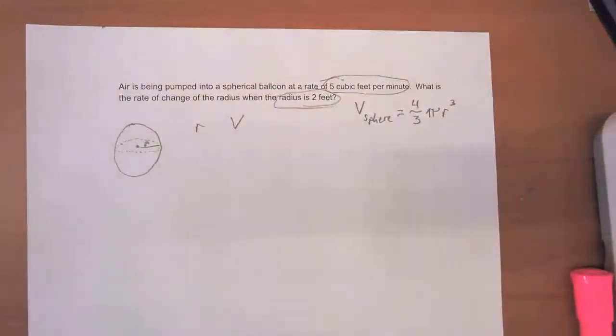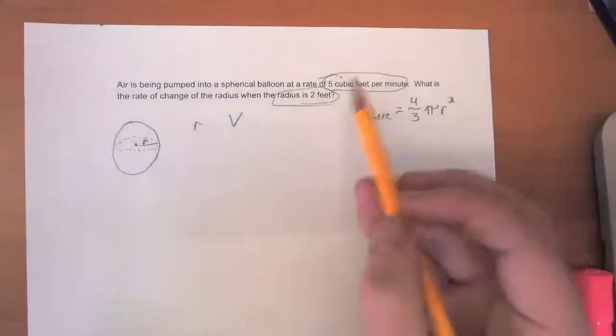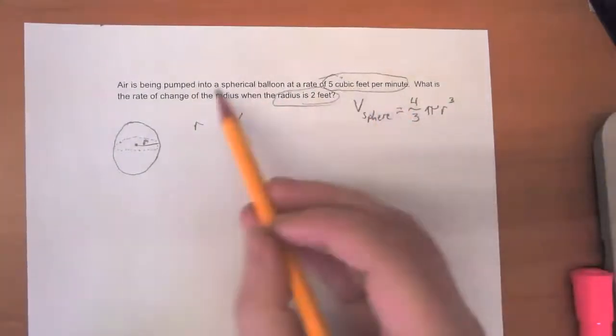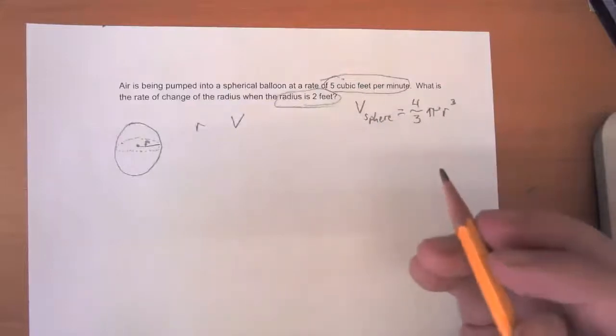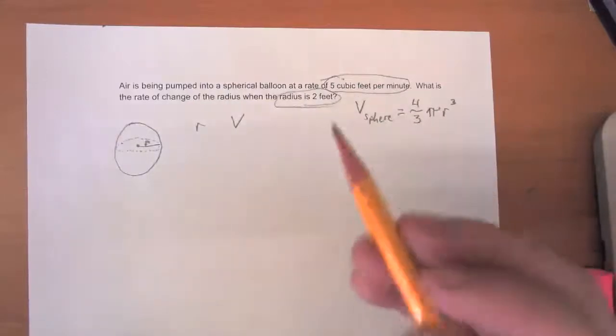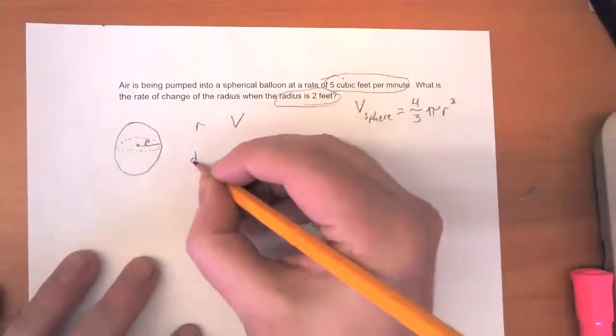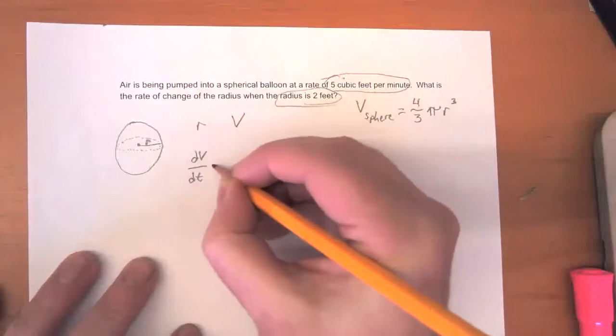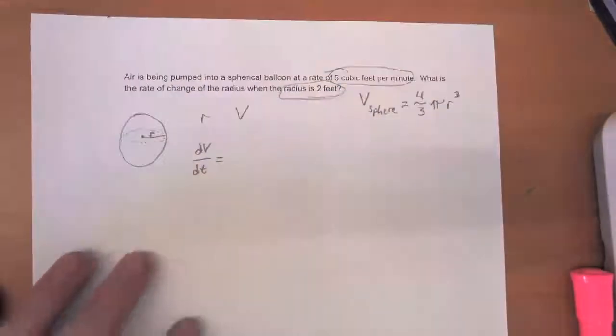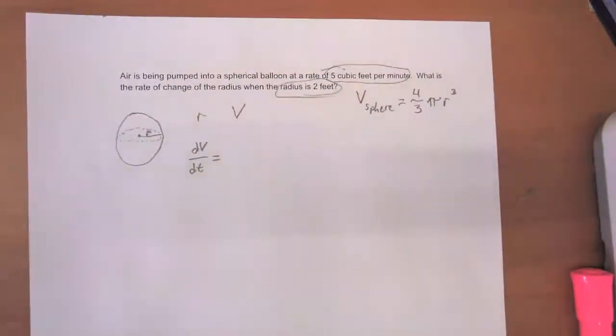Because the balloon is getting bigger, which makes its radius bigger. So this five cubic feet of air that's being pumped into the balloon is the change in the volume. We're going to express that fact by saying that the change in volume with respect to time dV/dt is equal to... Let me ask you, should we put in positive five or negative five here?